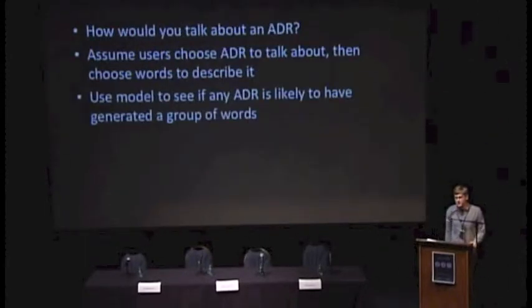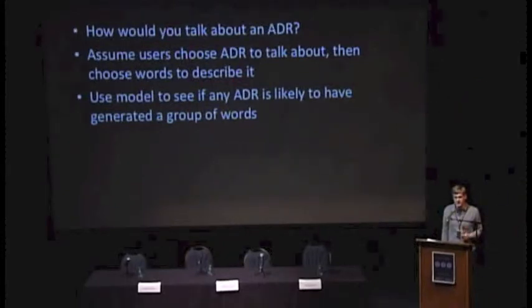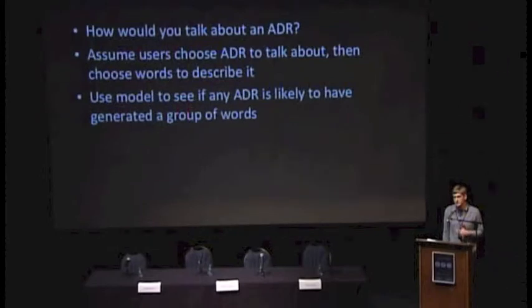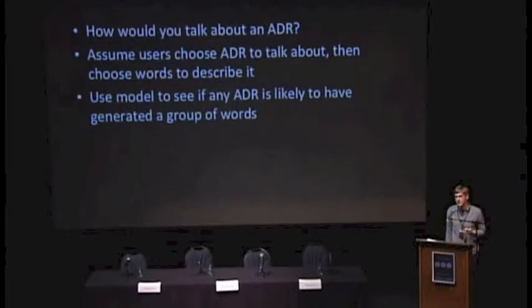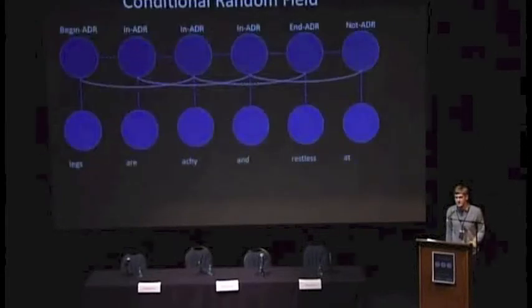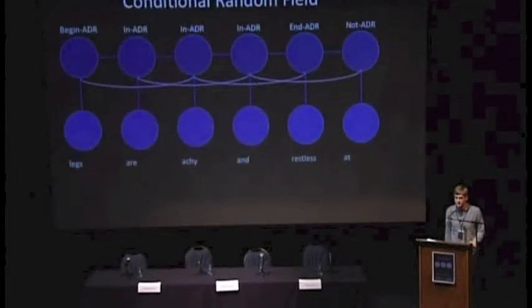The second Georgetown method is a topic model. Basically, it looks at how you would talk about an ADR. It assumes that you have an ADR to talk about and then you choose words. It looks in reverse and says: if we see those words, which ADR was likely to have generated them.